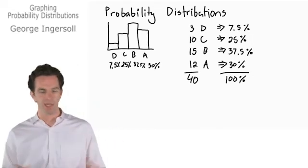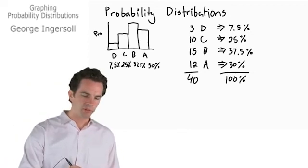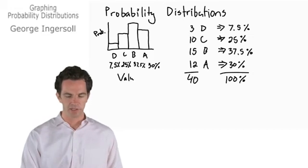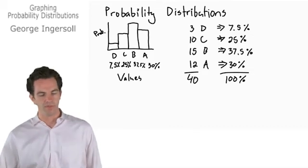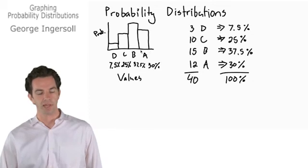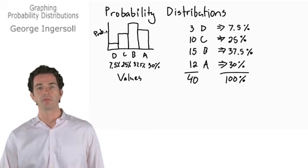In a probability distribution, what you have on the vertical axis is probability, and what you have on the horizontal x axis is values. You're going to show all the values on the bottom, on the horizontal axis, and the probability associated with each one of those values is going to be on the vertical axis.